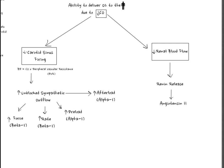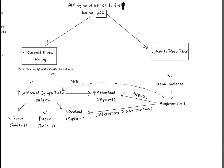Angiotensin 2 does a lot of different things in the body. First and foremost, it is a potent vasoconstrictor, increasing peripheral vascular resistance by constricting the arterioles, thereby increasing afterload. Another thing angiotensin 2 does is activate the release of aldosterone. Aldosterone works in the distal tubule and collecting duct of the kidney to increase the retention of sodium and water, increasing blood volume, but in heart failure this also increases the preload on the heart.